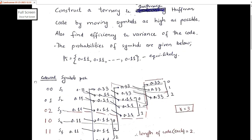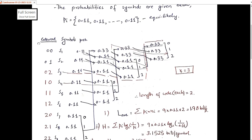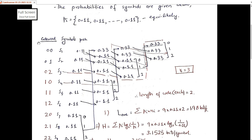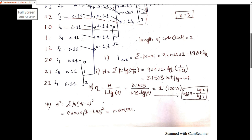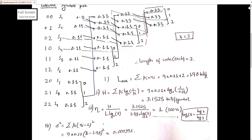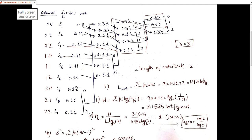To solve this using Huffman code, the first step is to arrange the symbol probabilities in descending order. Since all probabilities are equal, we simply list s1 through s9 with probability 0.1 each. These are the probabilities we use when discussing the ternary code.